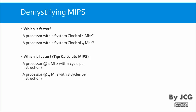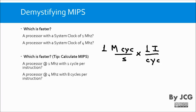Let's see which is faster: a processor working at one megahertz with one cycle per instruction, or a processor at four megahertz with eight cycles per instruction. The processor at one megahertz can execute one instruction per cycle. So the units cancel, and this microcontroller can work at one million instructions per second — that is, one MIPS.